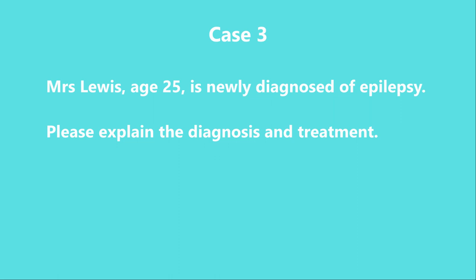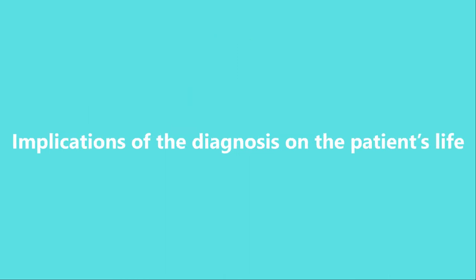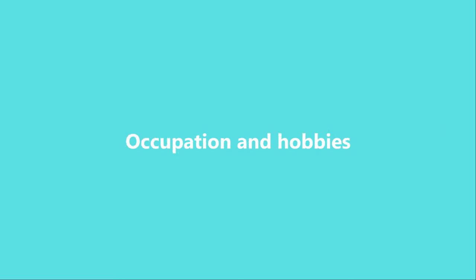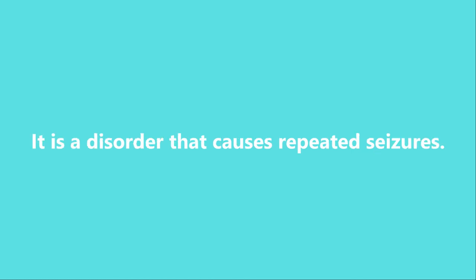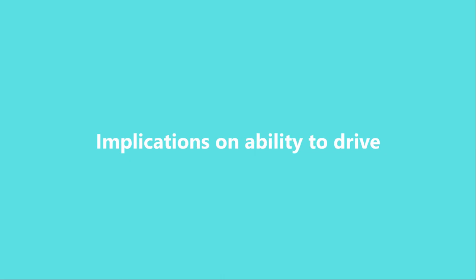The last case is slightly more challenging. Mrs. Lewis, age 25, is newly diagnosed with epilepsy — please explain the diagnosis and treatment. A new diagnosis of epilepsy in a woman of child-bearing age can come as a shock. This scenario requires the ability to break bad news sensitively. It is important to consider the implications of such a diagnosis on the patient's life — ask about occupation and hobbies, whether the patient is planning to start a family or is on contraception. Epilepsy is a disorder that causes repeated seizures. You need to think about the implications and impacts on the patient's life.